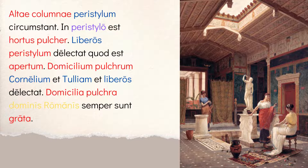In peristylo est hortus pulcher — in the peristyle there is a beautiful garden. Liberos peristylum delectat, quod est apertum — the peristyle delights the children because it is open. Apertum describes peristylum and they share the same ending. Then: domicilium pulchrum Cornelium et Tuliam et liberos delectat — the beautiful house delights Cornelius, Tulia, and the children. Pulchrum describes domicilium. Then: domicilia pulchra dominis Romanis semper sunt grata — beautiful houses are always pleasing to Roman masters; grata takes a dative, so dominis Romanis are your dative nouns.